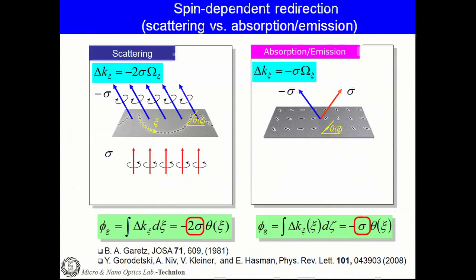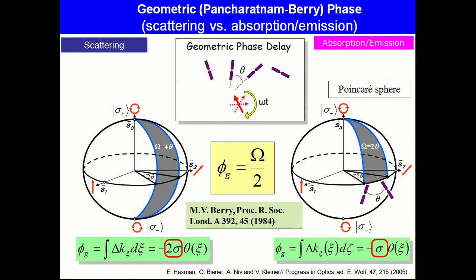There is a difference between scattering and absorption or emission effects by a factor of two. We can understand it as the Pancharatnam-Berry phase by traveling upon a Poincaré sphere or a Bloch sphere, resulting in a geometric phase equal to half the solid angle of the path upon the sphere. The geometric phase is spin-dependent and proportional to theta.